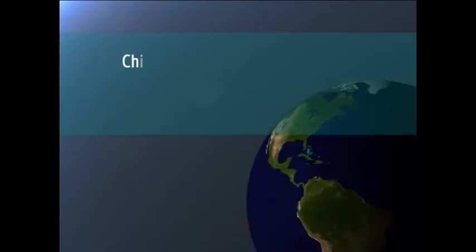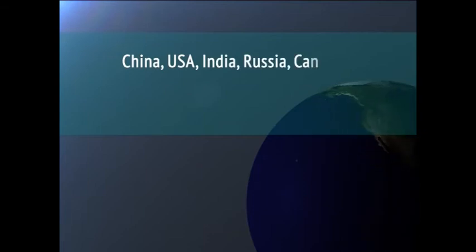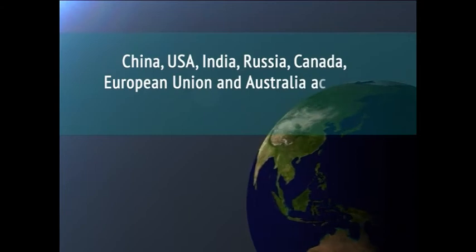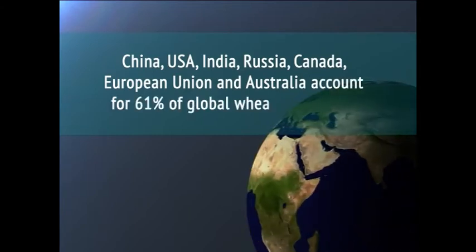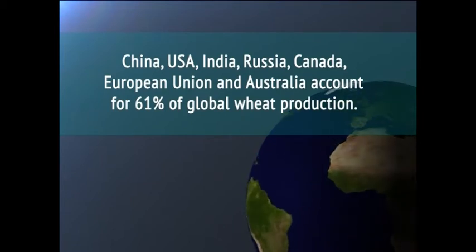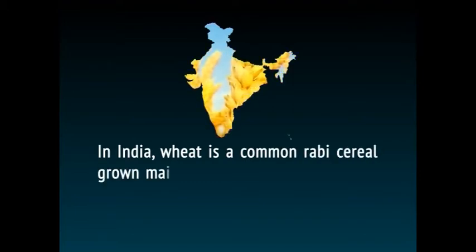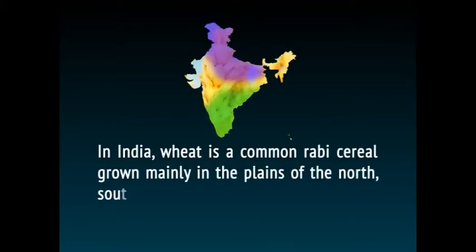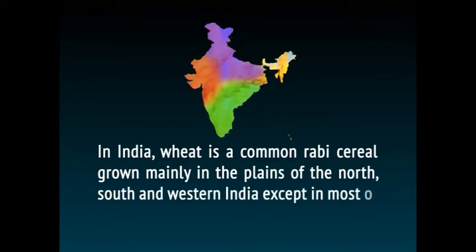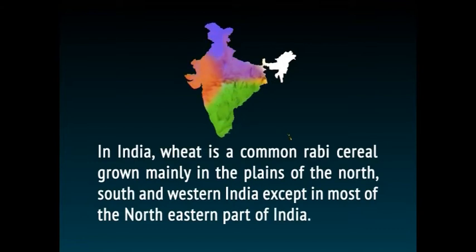China, USA, India, Russia, Canada, the European Union, and Australia account for 61% of the global wheat production. In India, wheat is a common Rabi crop grown mainly in the plains of the North, South, and Western India, except in most of the northeastern parts. The major states involved in wheat cultivation are UP, Punjab, and Haryana, which account for nearly 70% of the total wheat produced in the country.